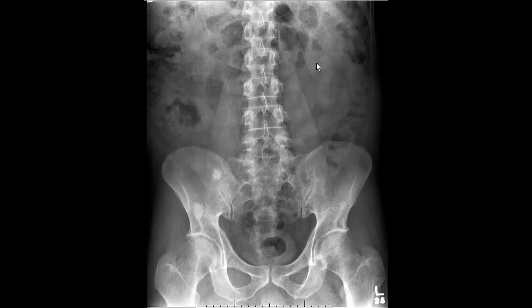The other thing you'd be looking for is air-fluid levels. Air-fluid levels within the small bowel, especially when they're at differential levels — sometimes called a stepladder appearance — is highly specific for obstruction. If you don't have this bowel dilatation or these air-fluid levels, and you have air throughout the colon and the small bowel to an equal extent, you're looking at what is just a non-obstructive bowel gas pattern.